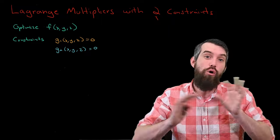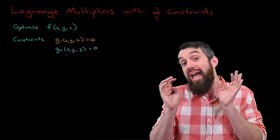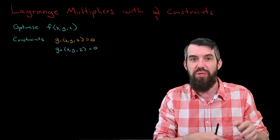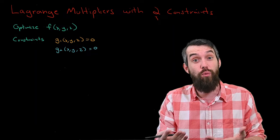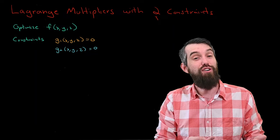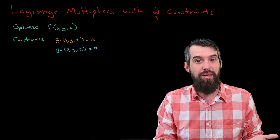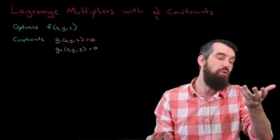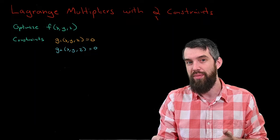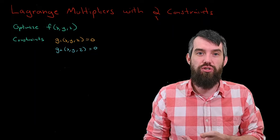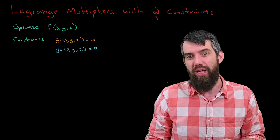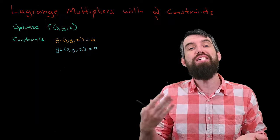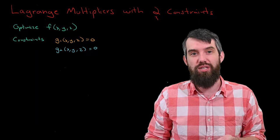So we're going to try to understand how this works, we're going to see an example, and try to look at both the algebraic side as well as the geometric side, so we can have a nice visual interpretation of what's going on. The first thing to note is that we're optimizing a function f of x, y, and z. We have two different constraints, g1 and g2 equal to zero, and the idea is finding the maximum of f subject to the fact that both constraints must be zero.